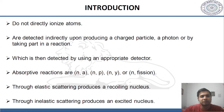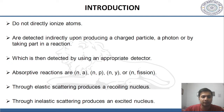Our aim is to detect neutrons. Neutrons do not directly ionize atoms, so they are detected indirectly by producing a charged particle or by taking part in a reaction, which is then detected using an appropriate detector. This can involve absorptive reactions such as (n,α), (n,p), (n,γ), or (n,fission). It may also involve elastic scattering, which produces a recoiling nucleus, or inelastic scattering, which produces an excited nucleus.